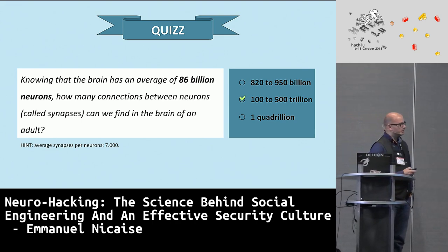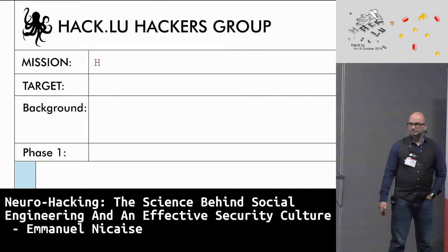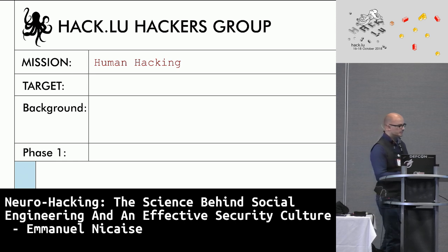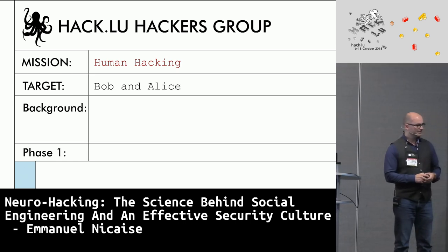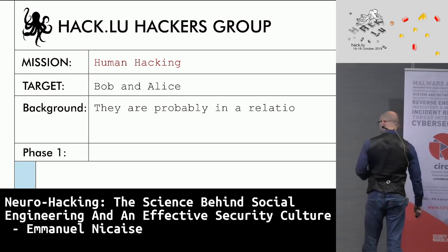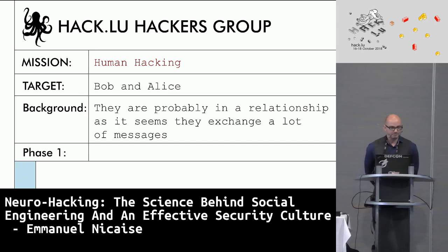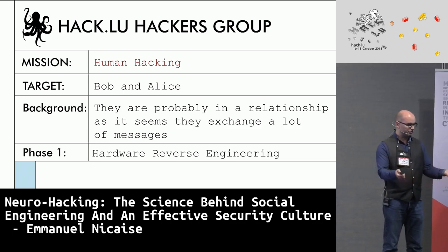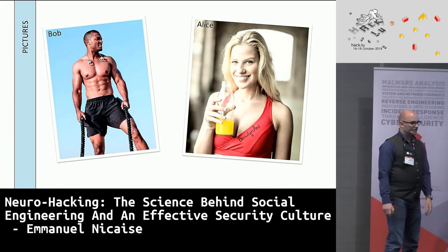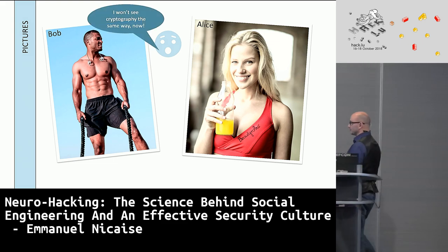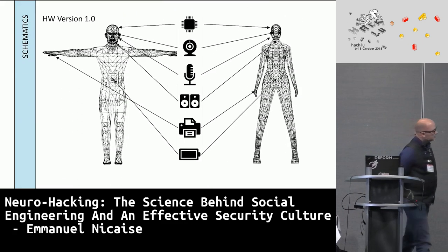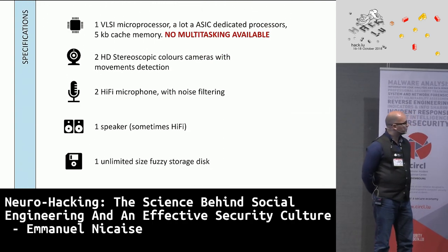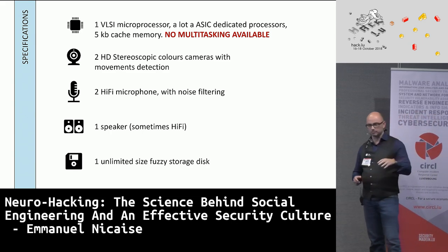So let's go to our little assignment: we need to hack humans. I propose we use two well-known representatives of the human species — Bob and Alice. It seems those two are together because they exchange a lot of messages recently. Let's start with the hardware reverse. Most of the time we start with the hardware — it's what you have in front of you. So, good looking. You have a body — a bit different for male and female — but if you look at it, you have a big microprocessor with some ASICs on the side to do specific tasks.